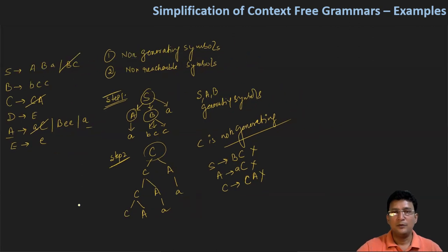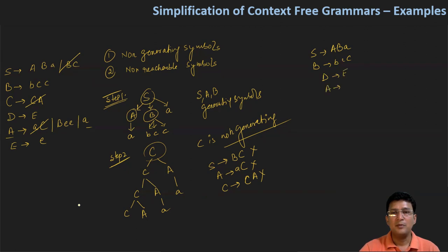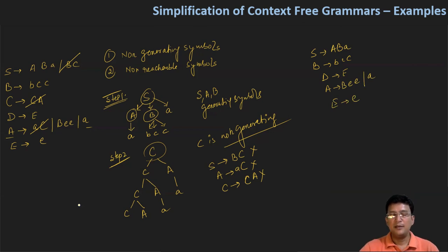Now the resultant grammar is: S produces A, B, A; B produces small b, small c, small c; and D produces E; then A produces B, small e, small e, and A; and E produces e. So this is the production in hand as of now. Aur iske baad hum dekhte hain ki hamare symbols S, A, B ki baat ho gayi.